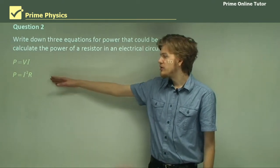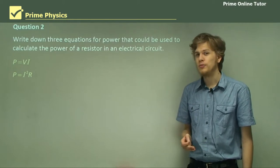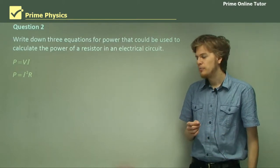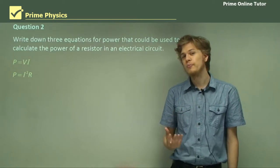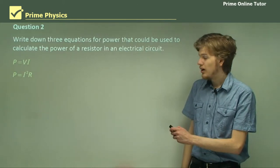We know P equals I squared R, which is very useful if we know the resistance of a resistor, but we don't know the voltage of the resistor, or rather the voltage across the resistor. Remember that the voltage across the resistor is not always the same as the voltage of the power source.